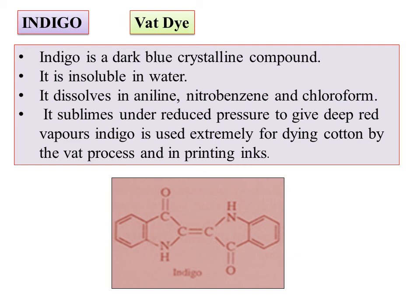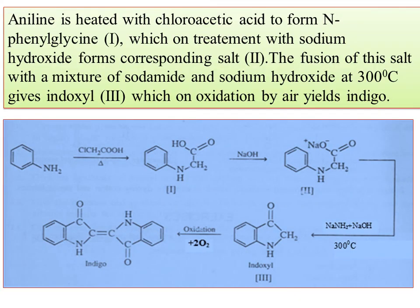The last dye to study is Indigo, which is a vat dye. It has a series of reactions: oxidation, reduction, and the coupling reaction takes place. They used to use a vat — wooden drums — that is vat dye. Indigo is a dark blue crystalline compound. It is insoluble in water. It dissolves in aniline, nitrobenzene, and chloroform. It sublimes under reduced pressure to give deep red vapours. Indigo is used for dyeing cotton by the vat process and for printing inks. Aniline is heated with chloroacetic acid to form N-phenylglycine, which on treatment with sodium hydroxide forms the corresponding salt. The fusion of this salt with a mixture of sodium hydroxide and sodium amide at 300 degrees gives the indoxyl, which on oxidation by air gives the indigo.